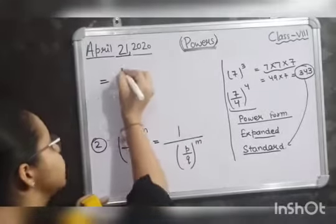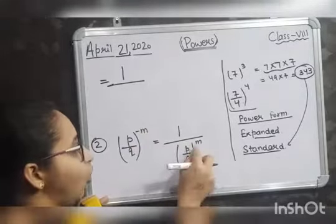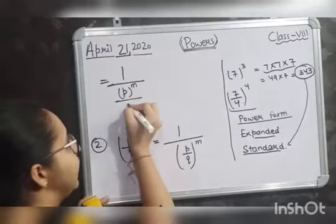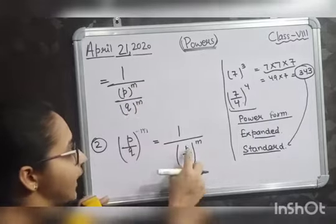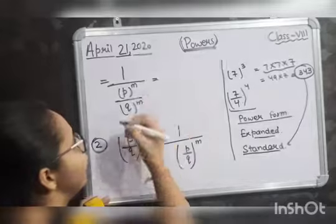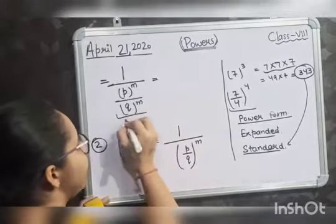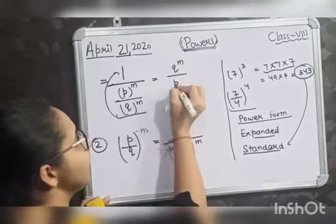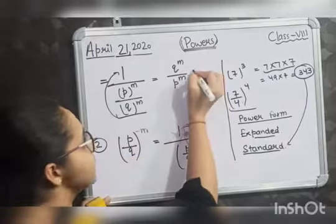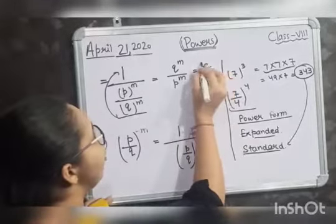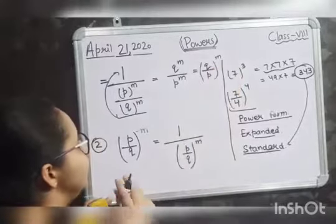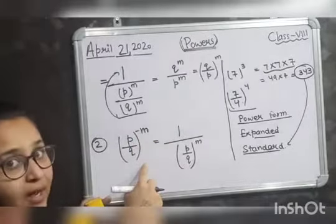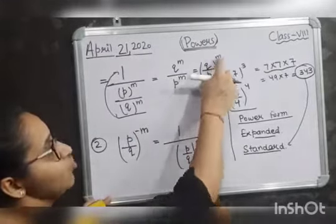This can be further simplified: 1 upon P upon Q whole raised to the power m can be written as numerator raised to the power m upon denominator raised to the power m. After simplification, Q raised to the power m comes upward and the denominator becomes P raised to the power m, which you can write as Q upon P whole raised to the power m. So P by Q raised to the power minus m converts to Q by P raised to the power m.